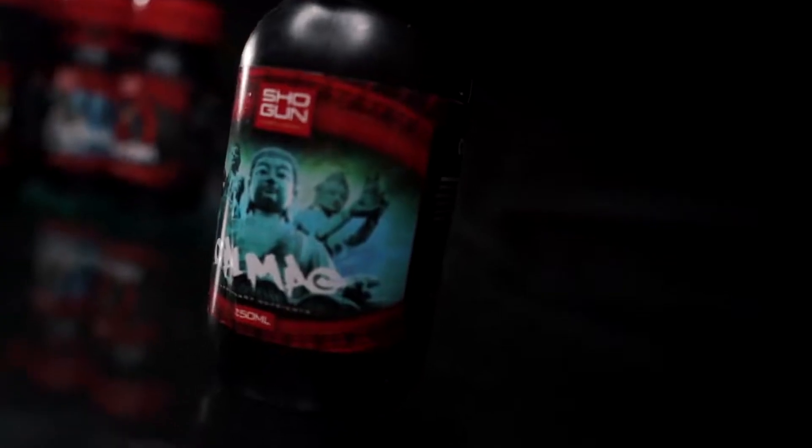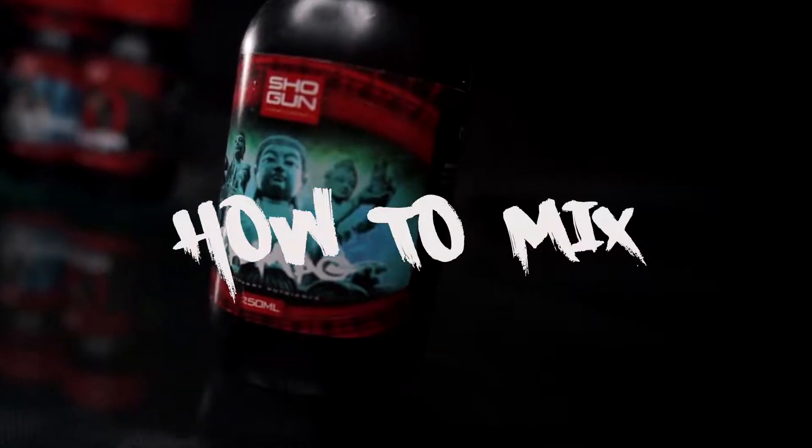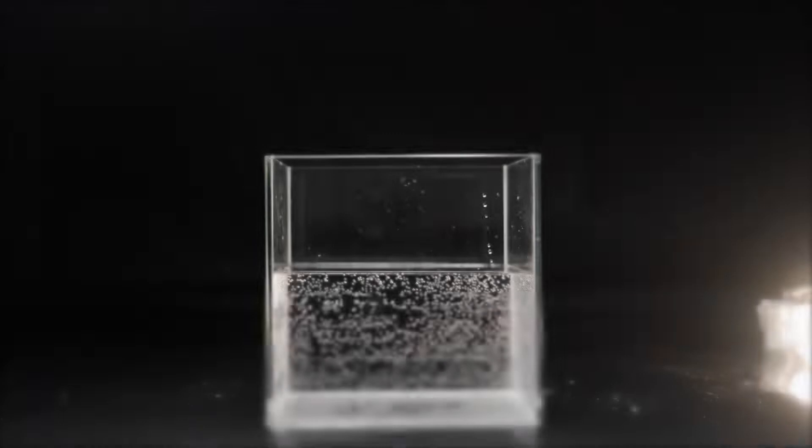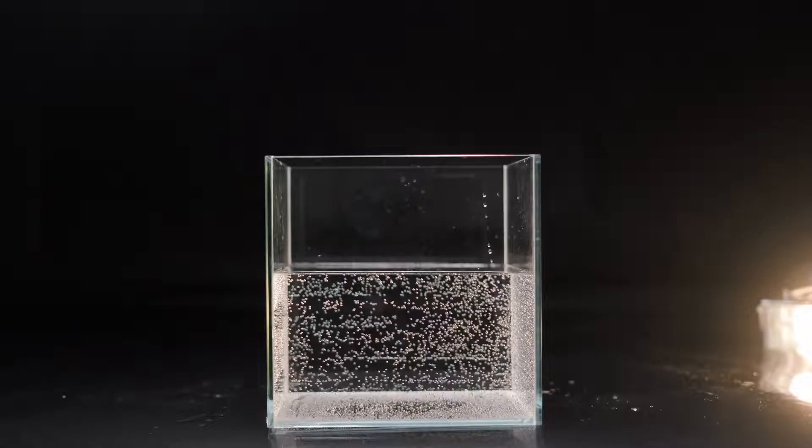What's up Shogun Clan? Today we're going to show you how to mix Shogun Cal Mag. Step 1: Get your tank pre-filled with base nutrients. Check out some of the videos on our product pages to find out how to mix your base nutrients.